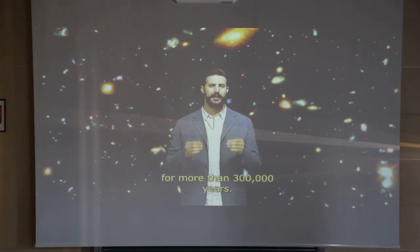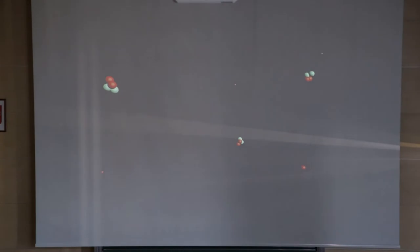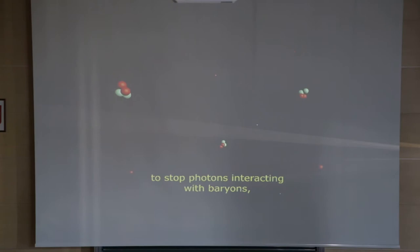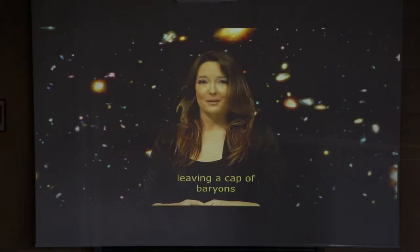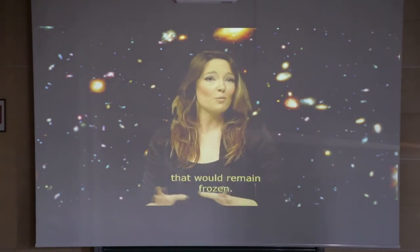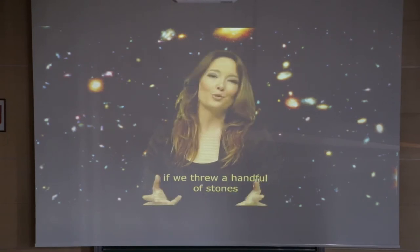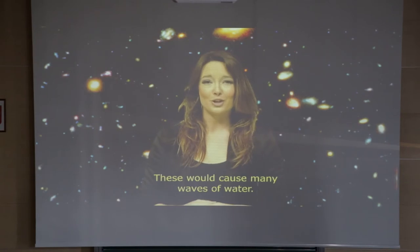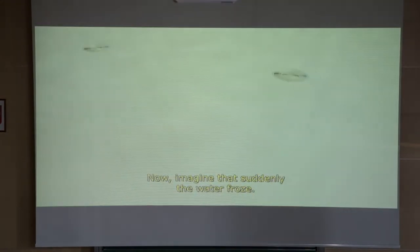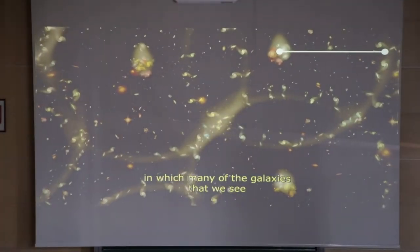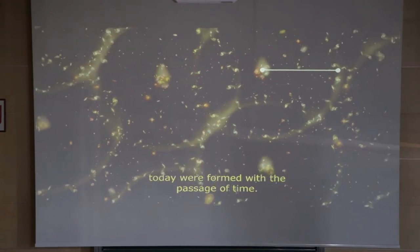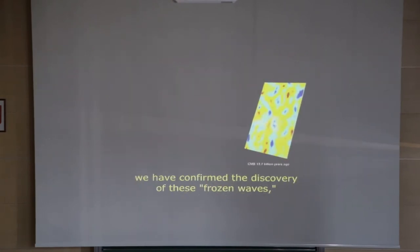The universe remained in this state for more than 300,000 years. At 380,000 years after the Big Bang, the temperature had decreased sufficiently for photons to decouple from baryons, and atoms formed for the first time. The photons could now travel freely - they are the same photons we detect today as the cosmic microwave background radiation. The radiation pressure diminished abruptly, leaving a shell of baryons frozen around the center of the density perturbation - similar to suddenly freezing a water wave. The centers and borders of these waves became accumulations of matter that later formed many of the galaxies we see today.